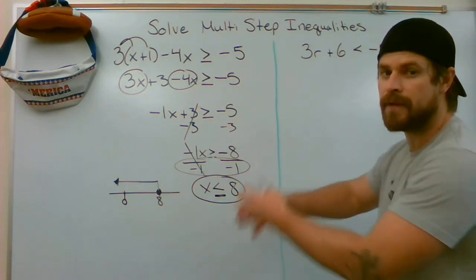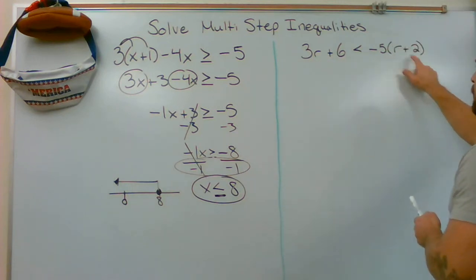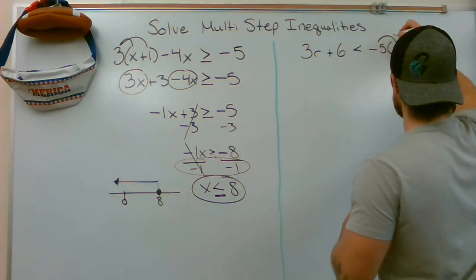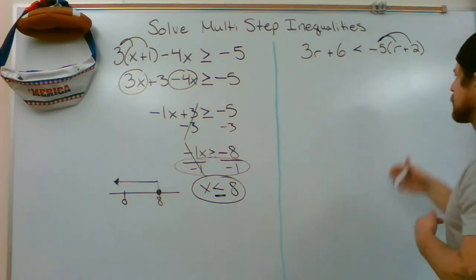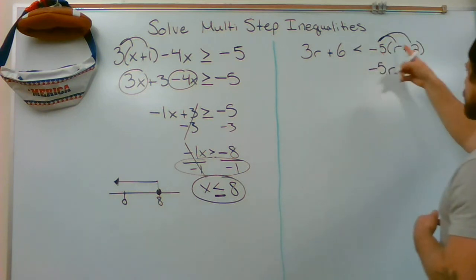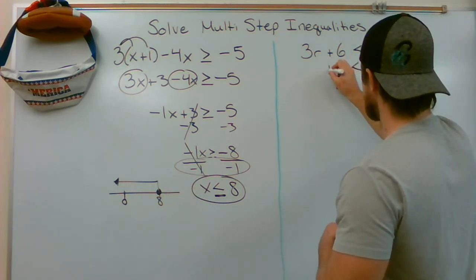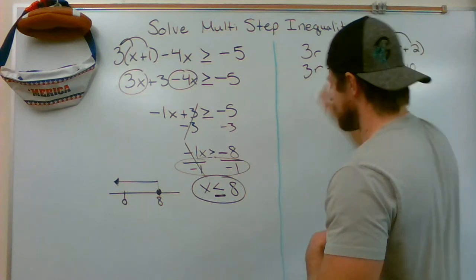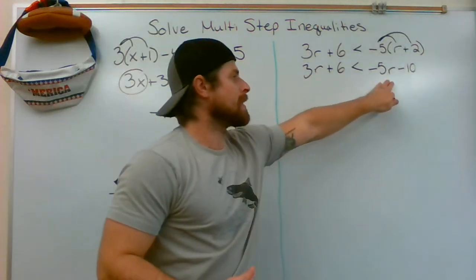Is the left side simplified? Is the right side simplified? The left is, but the right, I need to distribute this negative 5. So I'm going to distribute negative 5 to both of the terms inside of the parentheses. That's going to give me negative 5r, and negative 5 times 2 is going to give me negative 10. Everything gets brought directly down. Now that I'm here, both left and right side are simplified.